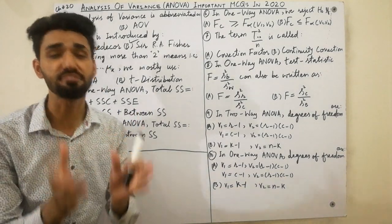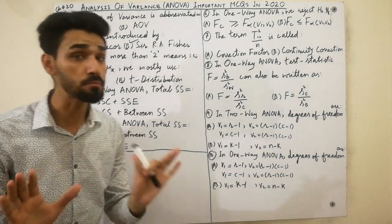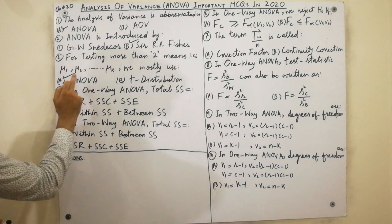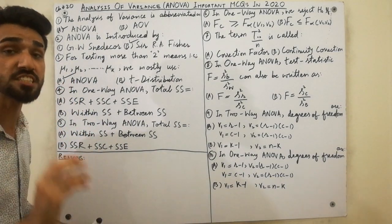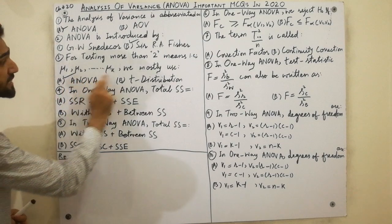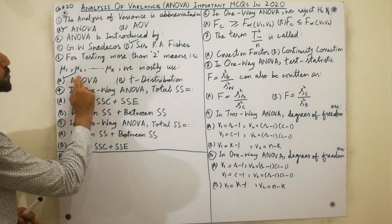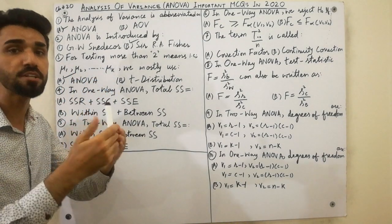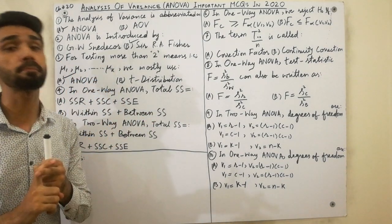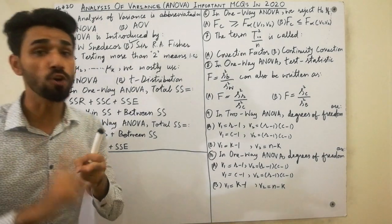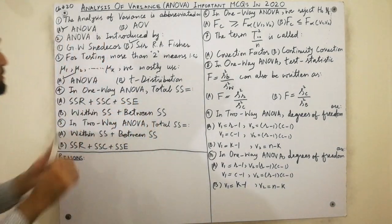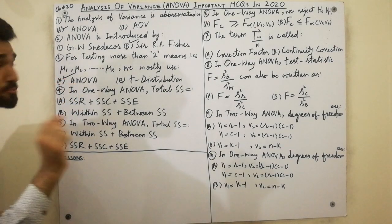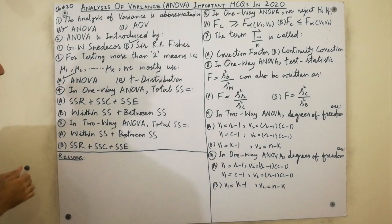Must remember: do not use t-distribution for more than two means, because t-distribution tests the mean and difference of means only. ANOVA is what we use to test different means — mu1, mu2, mu3, mu4 — so ANOVA can test more than two means.